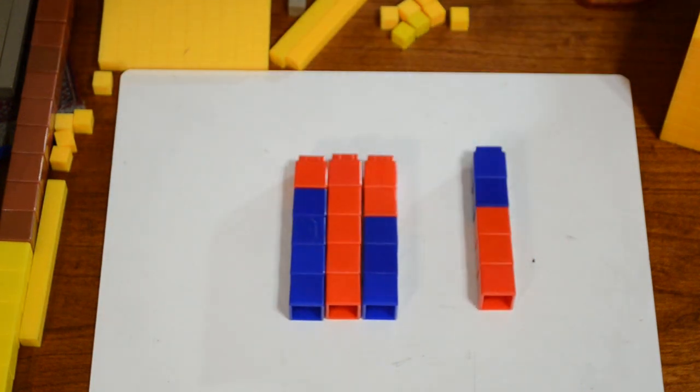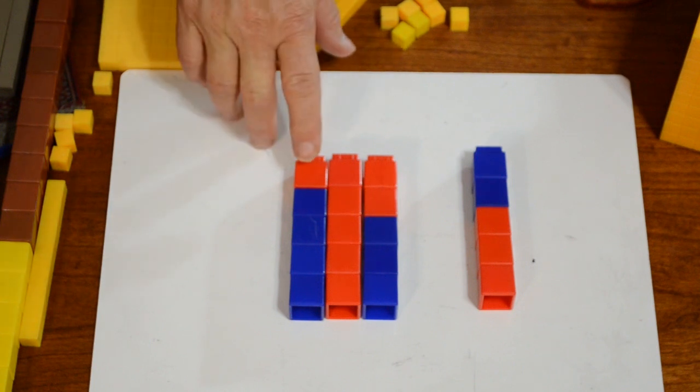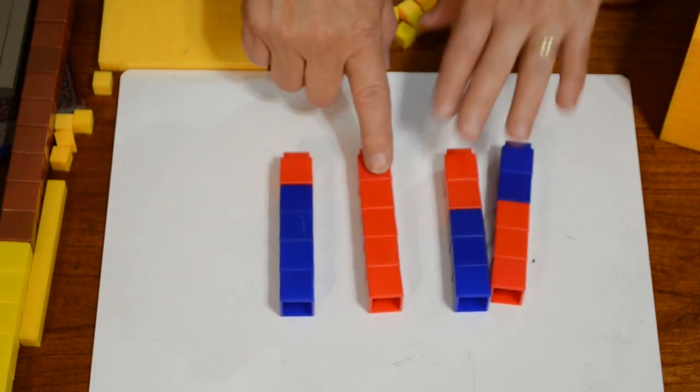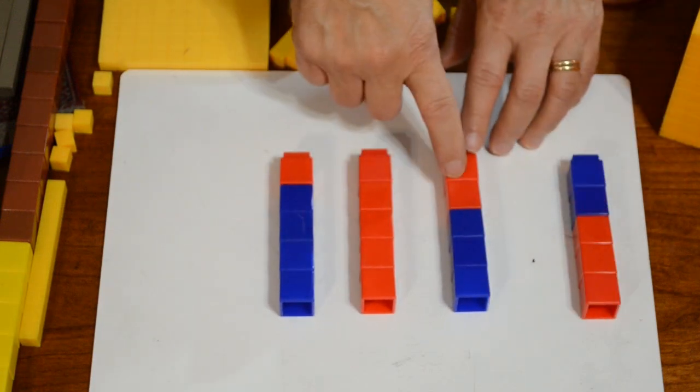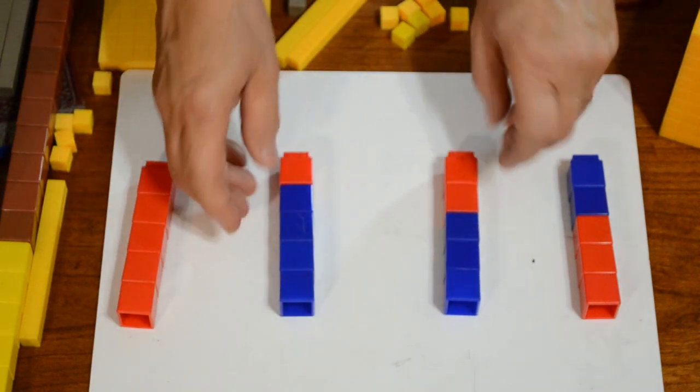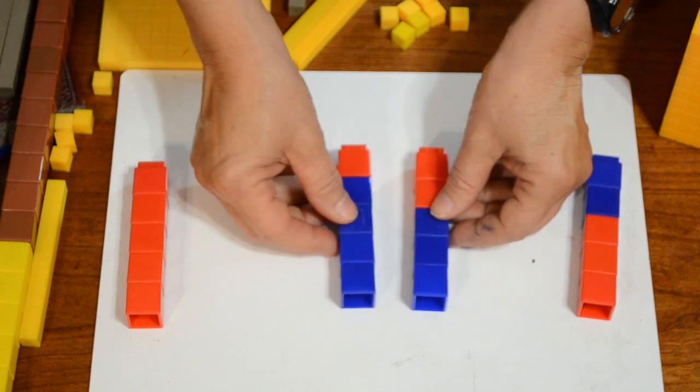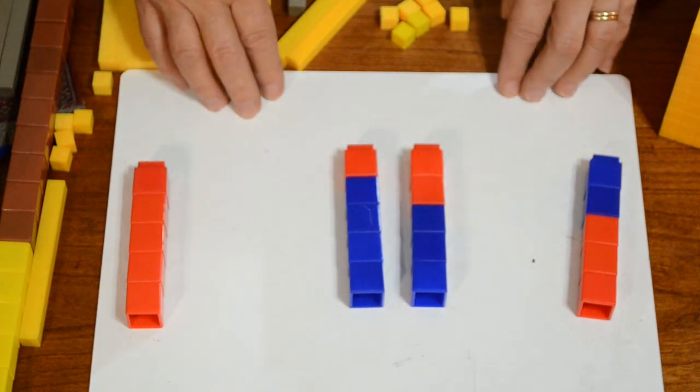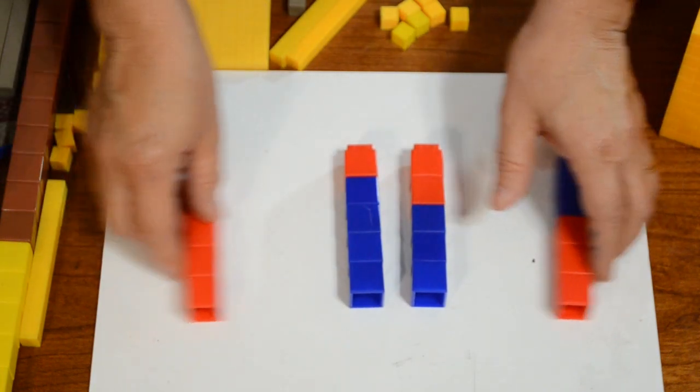Later at the middle school level, this can become something we use to teach properties of real numbers. If four plus one equals five, and three plus two equals five, then four plus one equals three plus two, transitive property of equality.